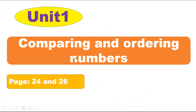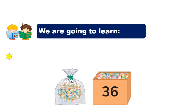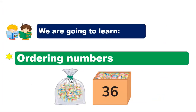In our previous class we learned about ordinal numbers — we learned about who is first, second, and third. We ordered them by saying first, second, third, fourth, up to tenth. Today you are going to learn how to order all the numbers.